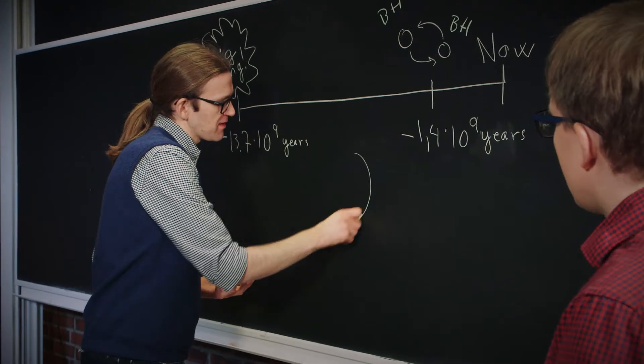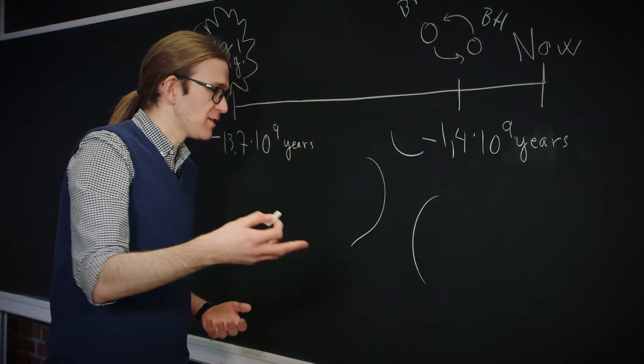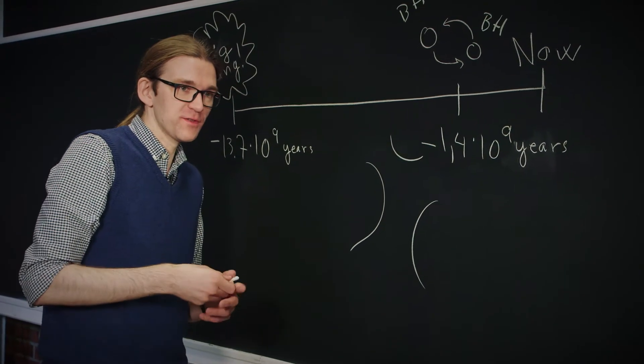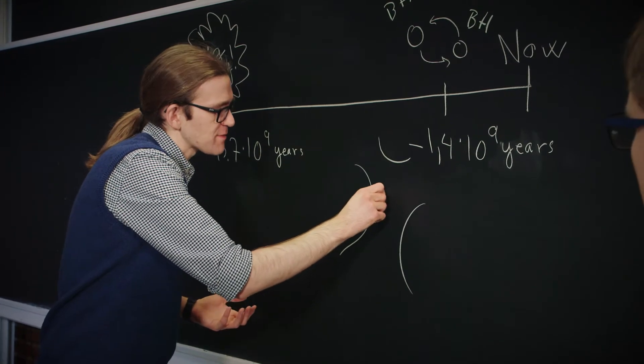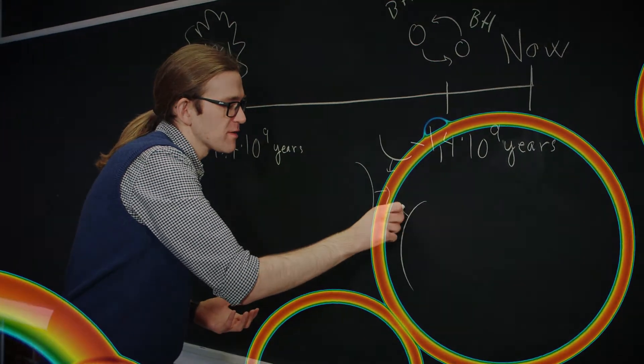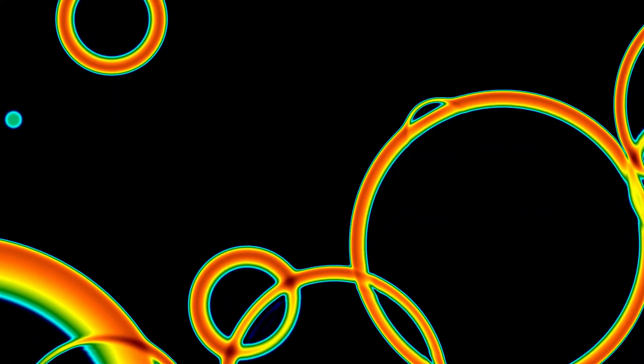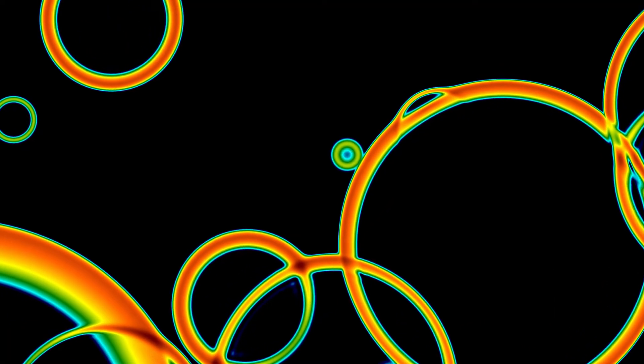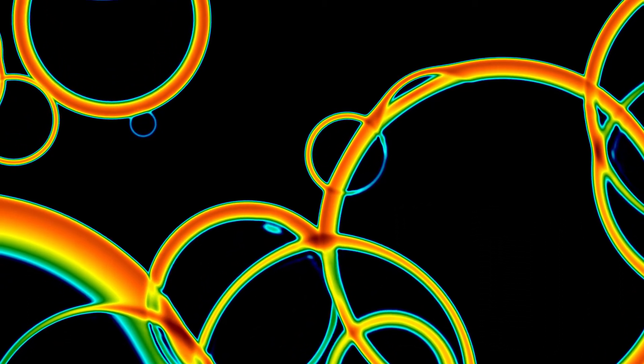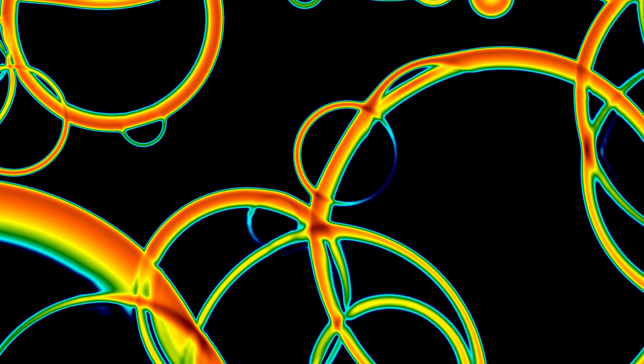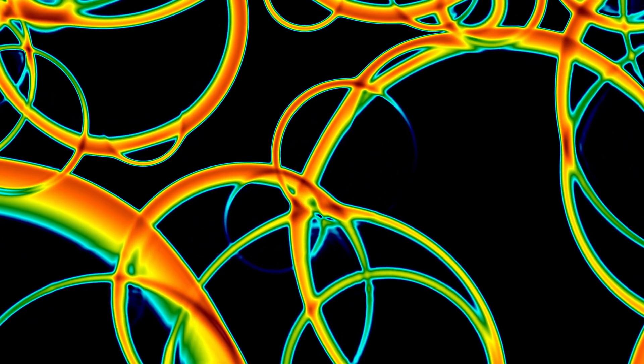Yeah, so at the phase transition you get bubbles nucleate, like the droplets of water, but instead there are bubbles of this Higgs phase, and they nucleate and the bubbles expand to fill the universe. And as they expand, they gather more energy and eventually intersect and collide in a very violent way. And that gives gravitational waves then? Yeah, it can in principle be a very strong source of gravitational waves.